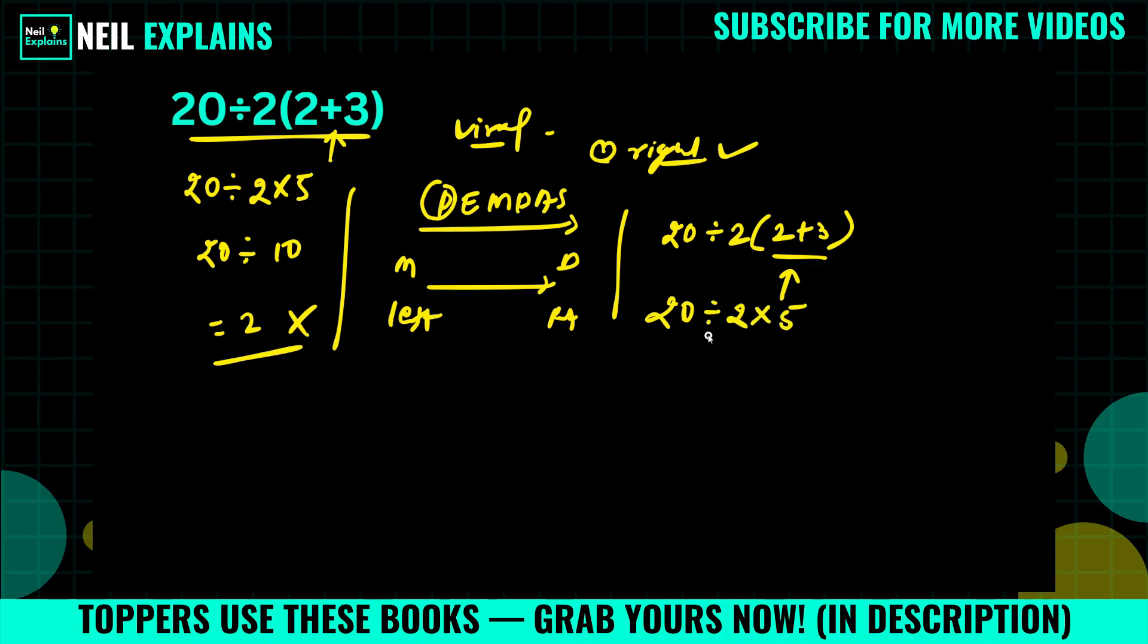If division and multiplication both have the same priority, we will solve from left to right. So first we will solve from this part: 20 divided by 2, which equals 10, into 5. And 10 into 5 equals 50. So here, 50 will be the right answer.